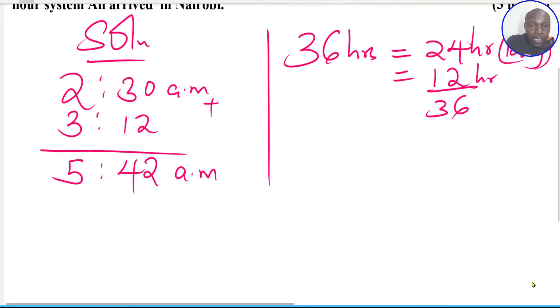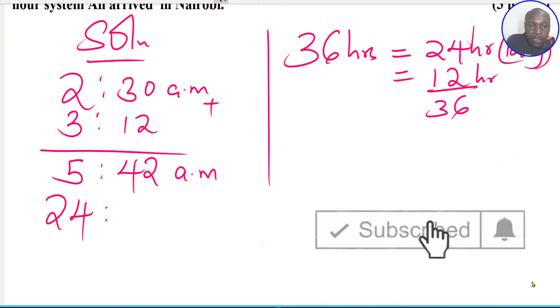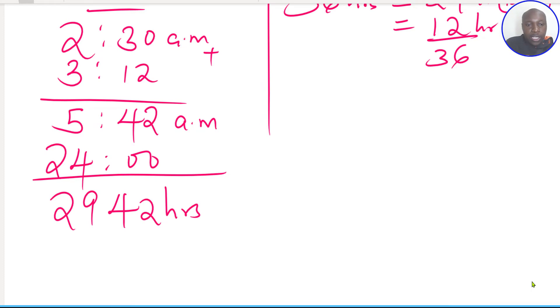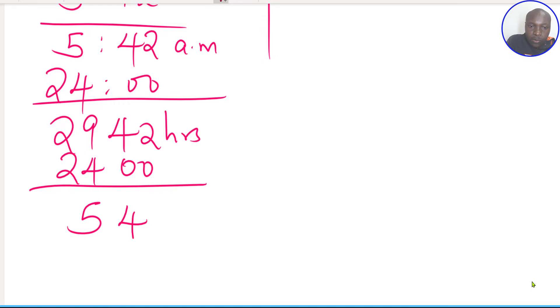So we are at 5:42 am. We add 24 hours first, 1 day. So when we add 24 hours this should give 29:42 hours. If you want to convert this time to get it in a 12-hour clock system, we subtract 24 hours. And this should give 5:42 am on Wednesday.